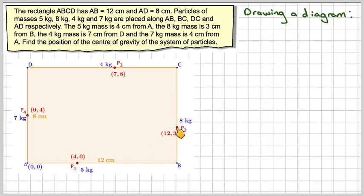The 8 kilogram mass is 3 centimetres from B. The 4 kilogram mass is 7 centimetres from D. And the 7 kilogram mass is 4 centimetres from A. Don't forget when you label rectangles you should go around anti-clockwise.